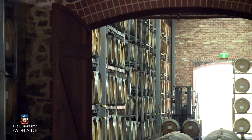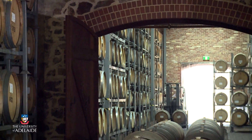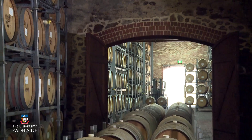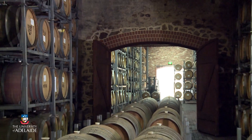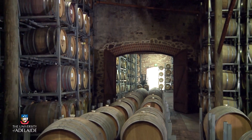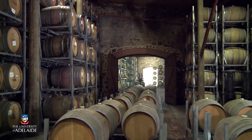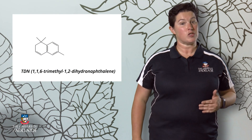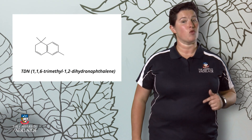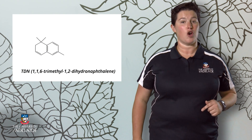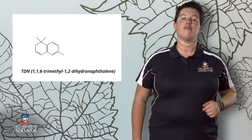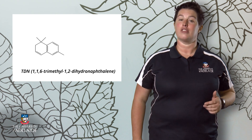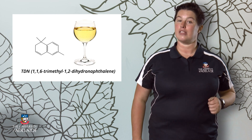Volatile compounds can also be formed through chemical transformations that take place during ageing and storage. The best example is TDN — 1,1,6-trimethyl-1,2-dihydronaphthalene — which gives the characteristic kerosene note in an aged Riesling.